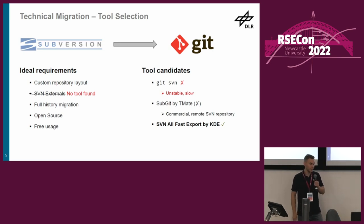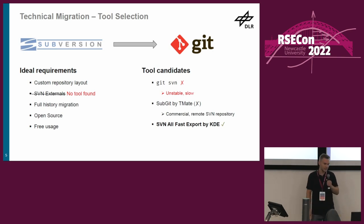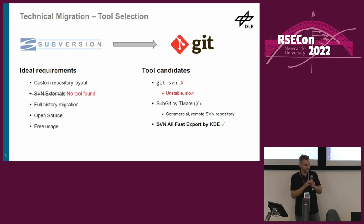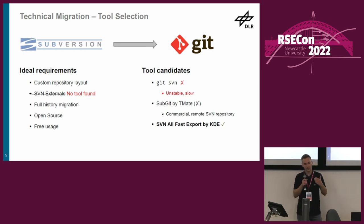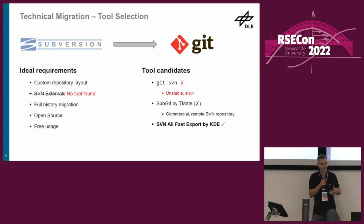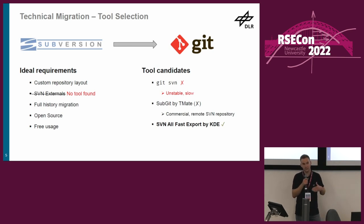Often recommended, for example by GitLab themselves, is SubGit by Teemate. It's a commercial tool and probably a good option for smaller projects, but one thing I really did not like about it is that it depends on the remote Subversion repository, meaning the migration speed depends on network speed.